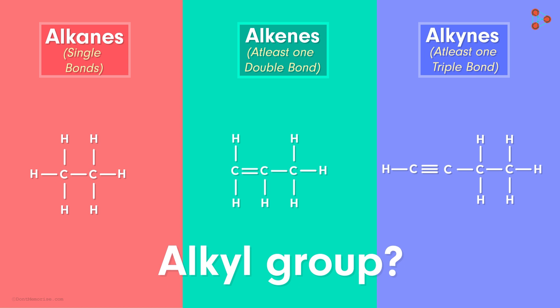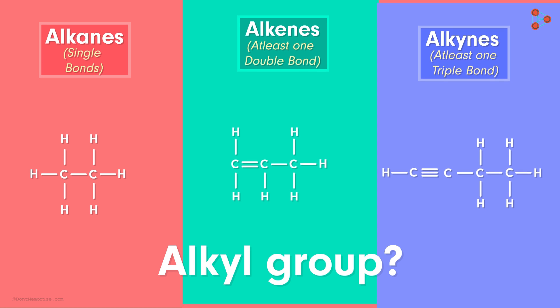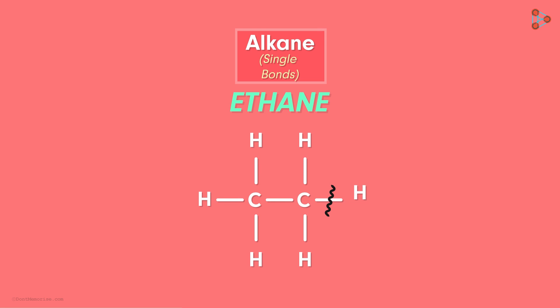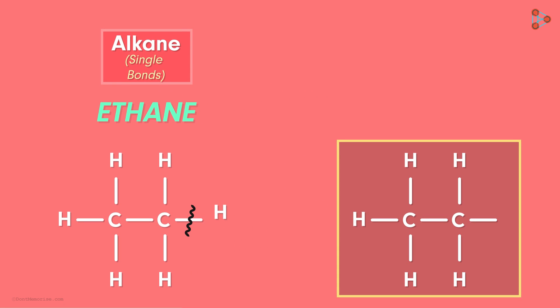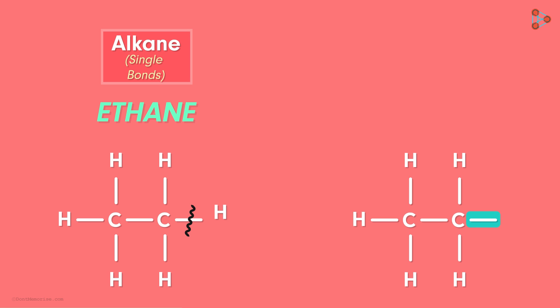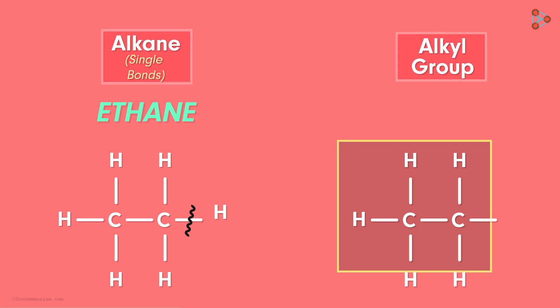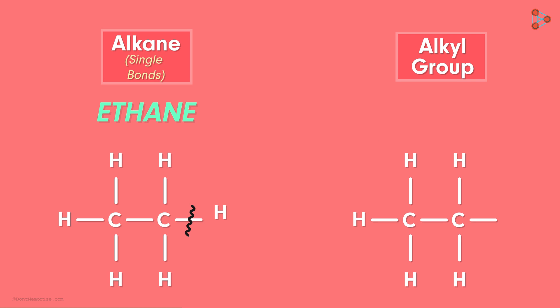So what is an alkyl group then? Let's take an example of ethane to understand this. We can see that each carbon atom here has its valencies completely fulfilled — 4 and 4. However, if we remove even one hydrogen atom, then the group becomes capable of forming bonds with other compounds. In this case, it can bond with a functional group from this point. This thing that you see here is an alkyl group — it is just derived from an alkane by removing one of its hydrogen atoms.